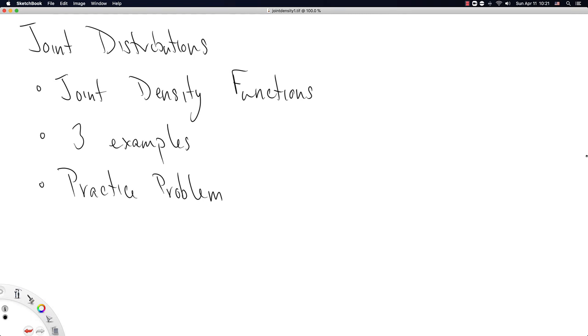This video is going to be about joint distributions. That is, distributions over more than one variable. So far we've only looked at distributions over one variable, but you can have joint distributions, that is distributions that show up with two variables.